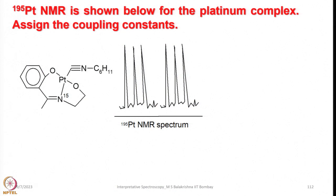I have given another interesting molecule here. Let us try to analyze the spectra given. This spectrum is of 195 platinum NMR. In this spectrum, if you see, we have two triplets of equal intensity. If you look into the structure, here we have platinum directly attached to N15 — that means here an enriched molecule with N15 — and we have another molecule here, isocyanate, where we have a carbon to nitrogen triple bond and CH2 groups.